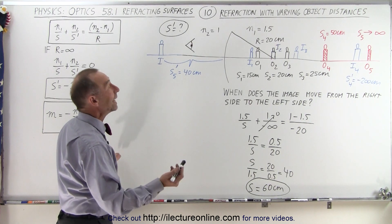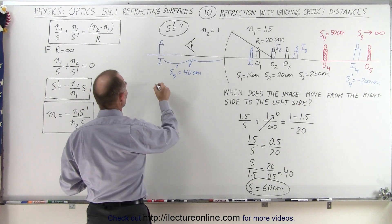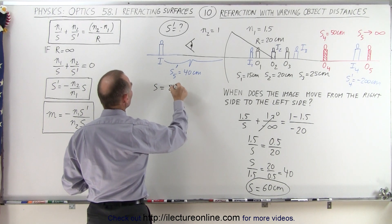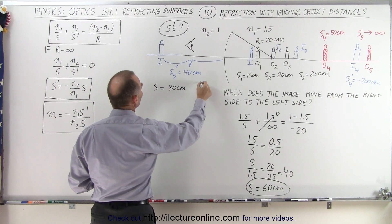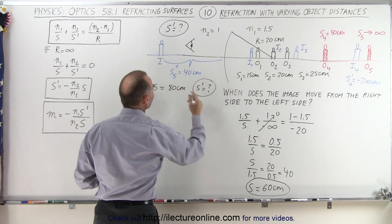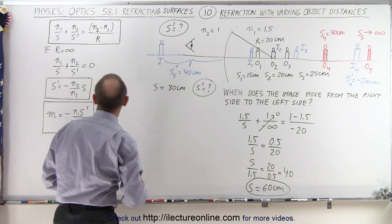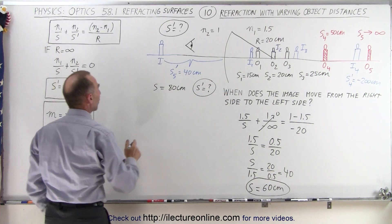So let's go ahead and put S at 80 centimeters. So now we're going to say S equals 80 centimeters, and let's find S' relative to that, and it should be on this side of the boundary. Let's find out using this equation.